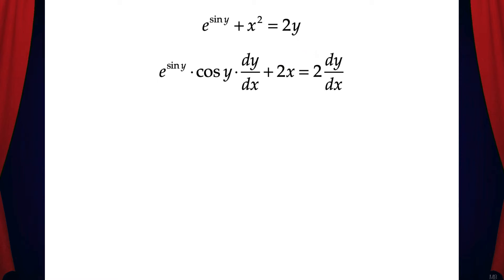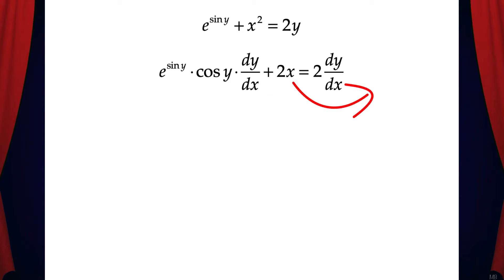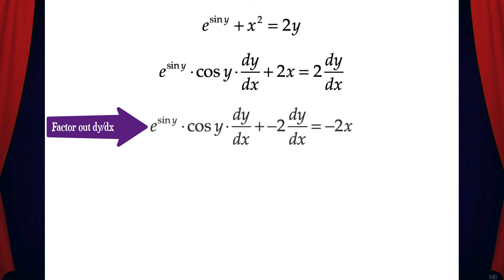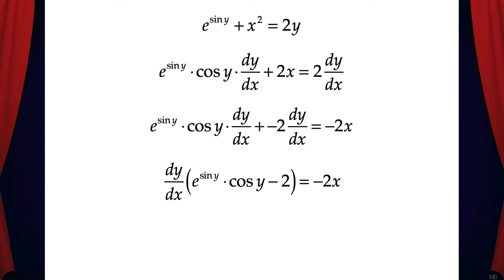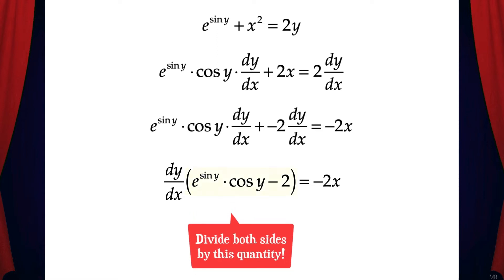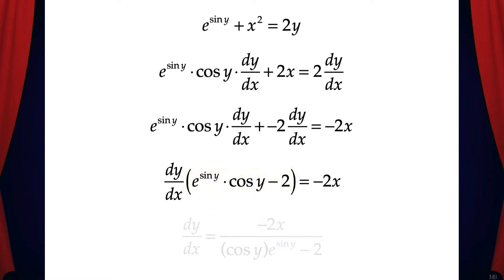Then we need to group the dy/dx terms together and solve. So we'll move the 2 dy/dx from the right side of the equation over to the left, and we'll also move the 2x to the right-hand side. Then we can factor out dy/dx, and that gives us dy/dx times the quantity of e to the sine y times cosine y minus 2 equals negative 2x. Then we just divide and get dy/dx equals negative 2x over cosine y times e to the sine y minus 2.